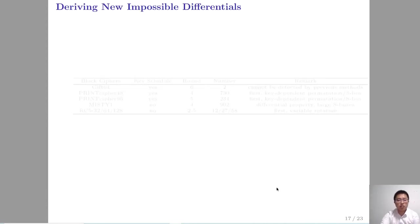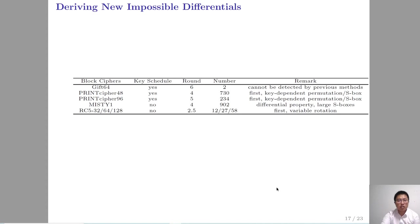As a result, we apply our tool to various block ciphers. Those results can be divided into three aspects. In the aspect of deriving new impossible differentials, we apply our tool to GIFT and PRESENT cipher. We search the impossible differentials considering the key schedule in the related-key setting and get new six-round impossible differentials. For PRESENT, we propose the first modeling method for key-dependent permutation and search impossible differentials considering all details of the key schedule. For MISTY-1, our tool can consider all the differential properties of S-boxes. For RC5, we present the first modeling method for variable rotation and get the first result of impossible differentials.